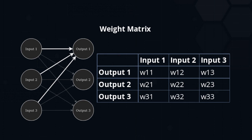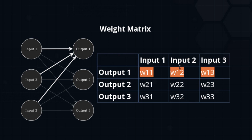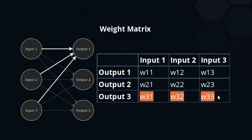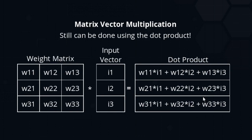A matrix is basically a list of vectors. Here we have one output with three weights coming into it — first, second, and third — from each of the three inputs. So the first row of the matrix represents the three inputs contributing to the first output's prediction. The same goes for the second output and the third output. All we need to do to represent them with one variable is to take the three lists and stack them together — that stacking is called a matrix, or a table, or a list of lists.